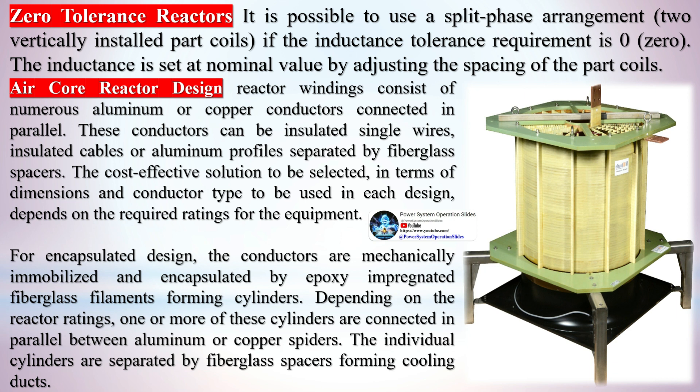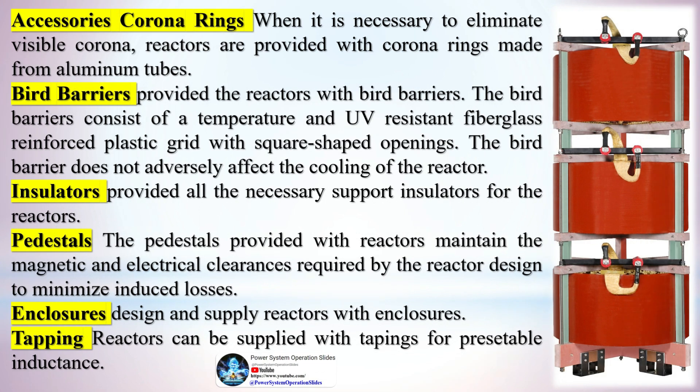Air core reactor design: reactor windings consist of numerous aluminum or copper conductors connected in parallel. These conductors can be insulated single wires, insulated cables, or aluminum profiles separated by fiberglass spacers. The cost-effective solution selected in terms of dimensions and conductor type depends on the required ratings for the equipment.